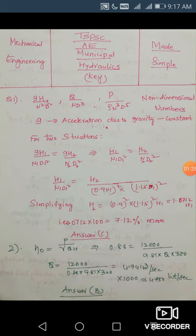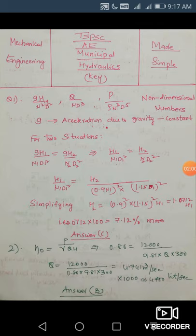He has given that n2 is 10% less, that is 0.9 of n1, and the size is 15% more, that is 1.15 of d1. Substituting, h2 = (0.9)²×(1.15)²×h1 = 1.0712 h1, that is 7.12% more. So 107.12 means 7.12% more than the earlier head. Your answer is C.